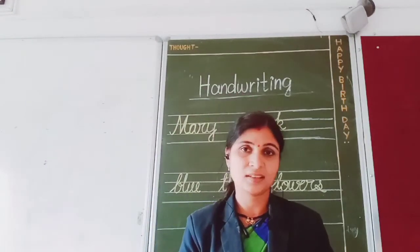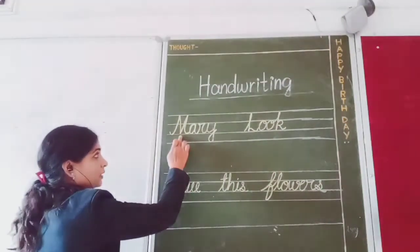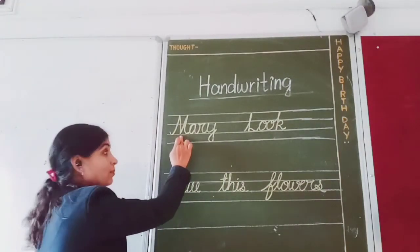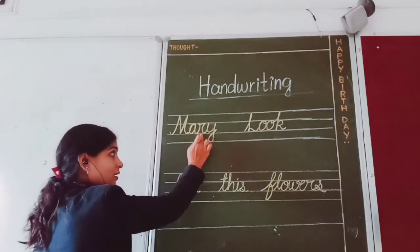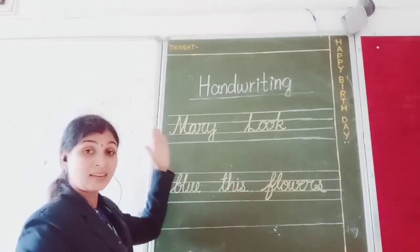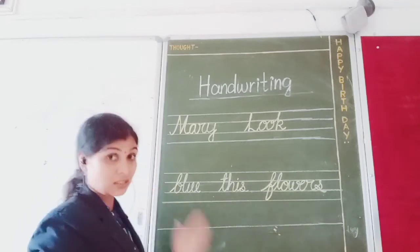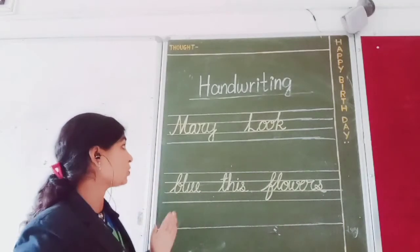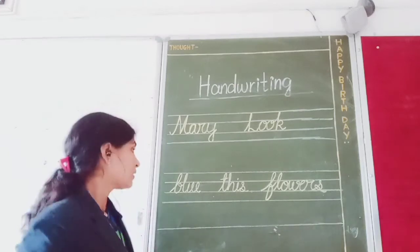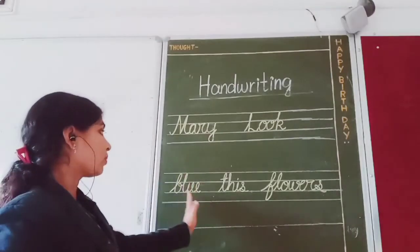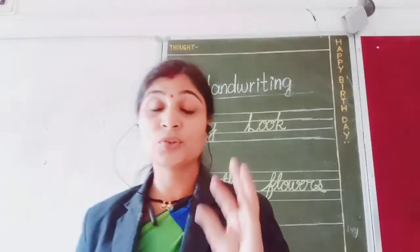So children, first you see: M — capital cursive — A — small cursive — R and Y — small cursive. Maintain the line properly where you have to write the capital cursive letter and where you have to write the small letter. So children, today we have written these five words: Mary, look, blue, this, and flowers.